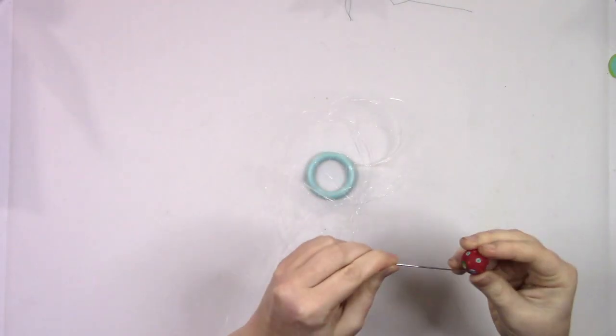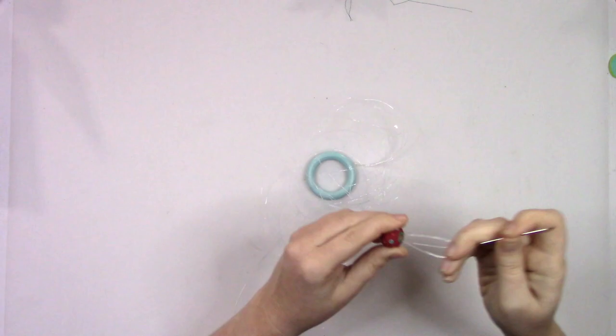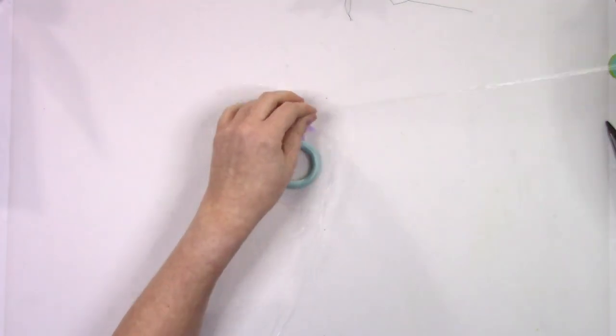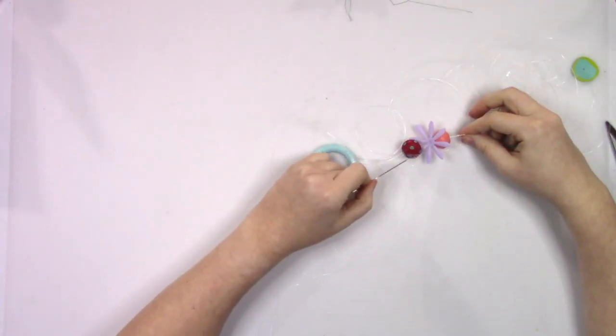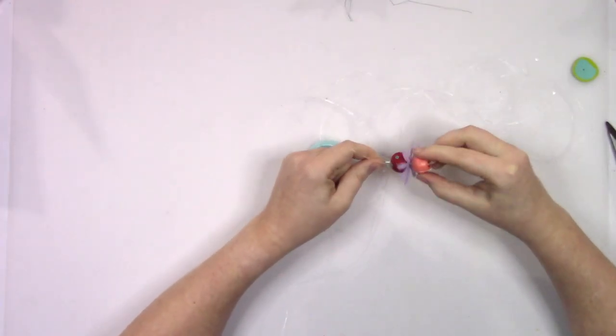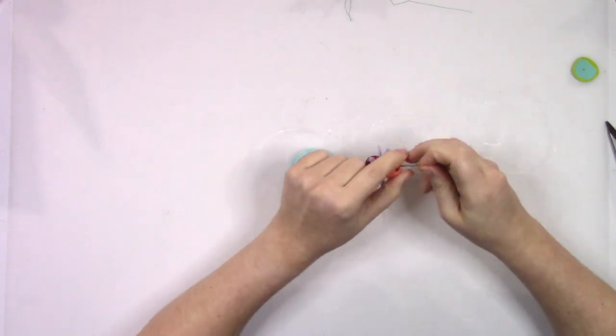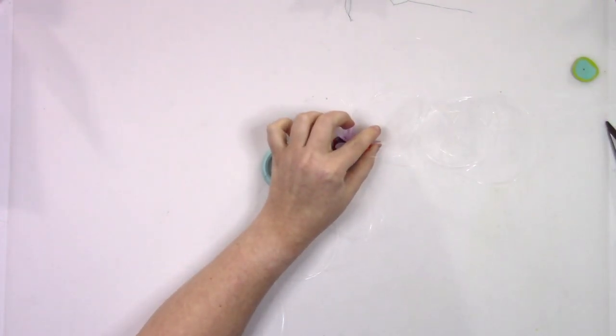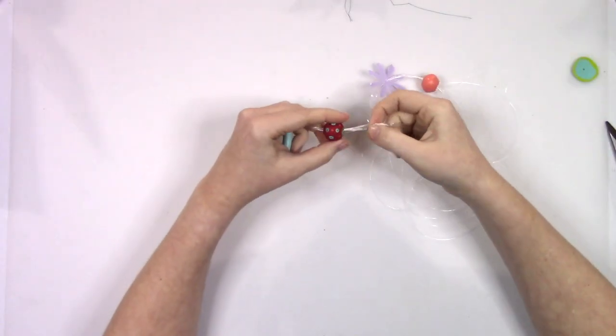It was easier for me to do a few at a time, and then I'm going to run all of my strings through those beads. These are going to be the very top beads that are the beginning of your chandelier.